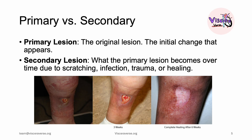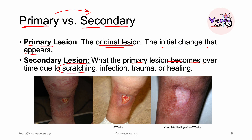Now we come to the most important concept of this lecture: is what you're looking at the cause of the disease — that is, the primary lesion — or is it a result of something that happened to the primary lesion, making it a secondary lesion? A primary lesion is the original, initial change that appears on the skin. A secondary lesion is what the primary lesion becomes over time — perhaps due to scratching, infection, trauma, or even healing. For example, here we had an ulcer that grew bigger and then over six weeks healed and formed a scar.